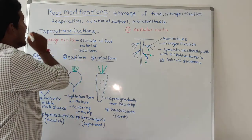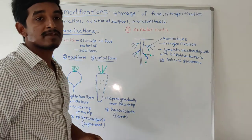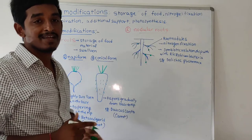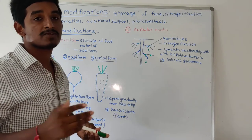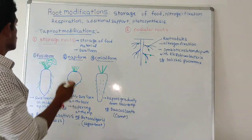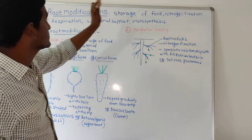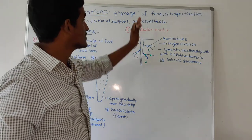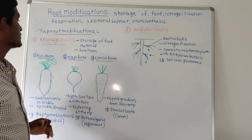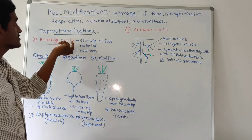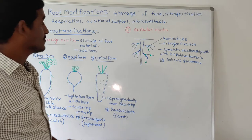We start with tap root modification. In a tap root system there is a main root present, whereas in an adventitious root system or fibrous root system there is no main root. First we are starting with storage roots — roots that help in storage of food material, which is a special function.